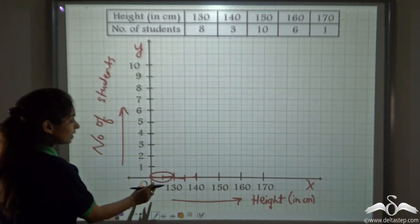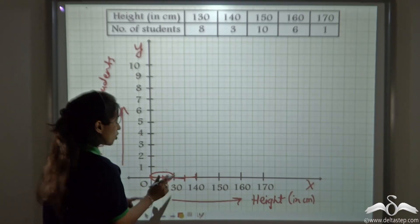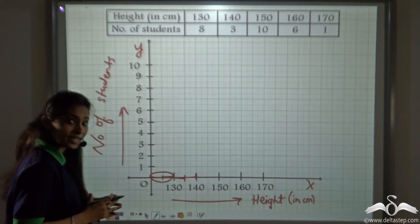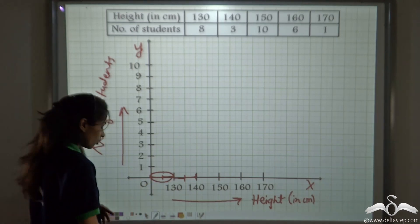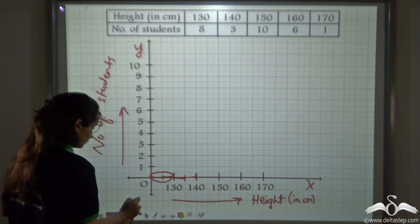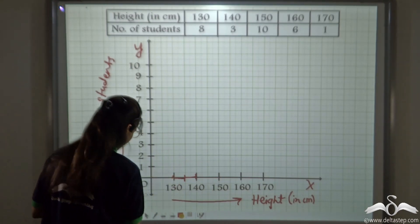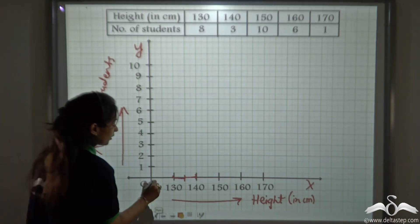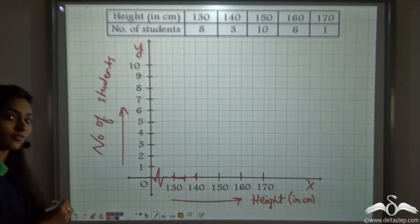Well, you can see that the difference between 0 and 130 is great, like 130 centimetre. So only this 2 centimetre box is representing 130 centimetre. So this is where we have to put the kink because some data is missing over here. So we put the kink here. This will make your graph correct.